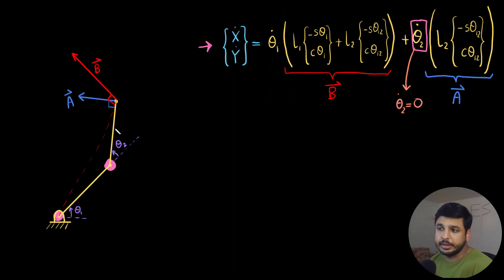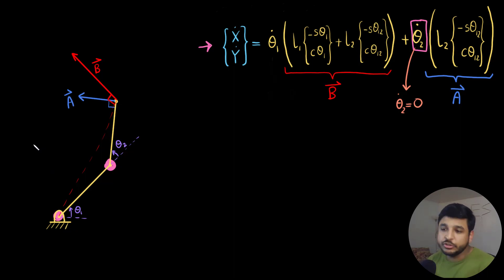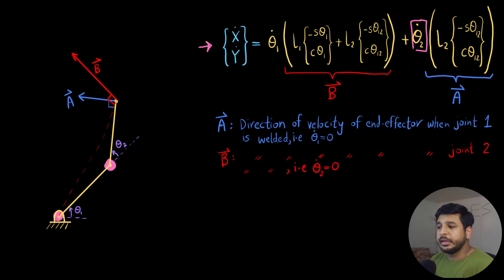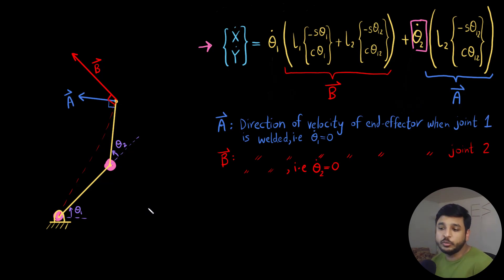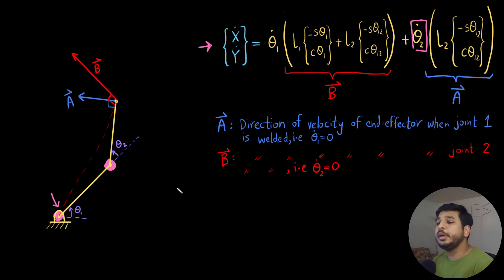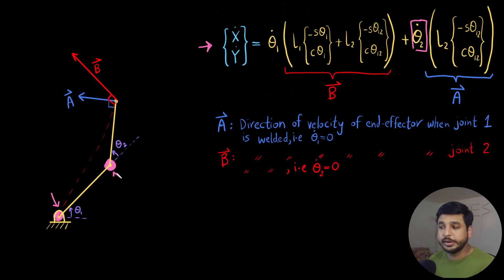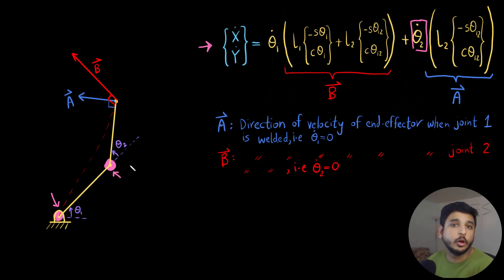Now we know what the a vector and b vector are. Another way to understand them: 'a' is the direction of the velocity of the end-effector when joint 2 is varied (i.e., θ₂̇ is non-zero, θ₁̇ = 0), and 'b' is the direction of the velocity of the end-effector when joint 1 is varied (i.e., θ₁̇ is non-zero, θ₂̇ = 0).